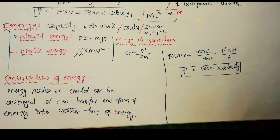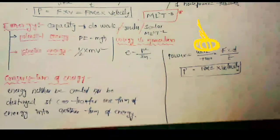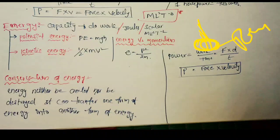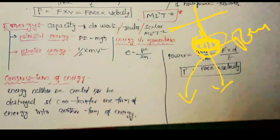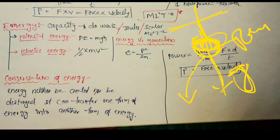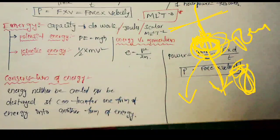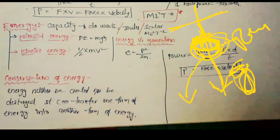If you have a string and hang an object with it, you have potential energy. Because of that energy, you have a gravitational force. The energy possessed by a body by virtue of its position is called potential energy.